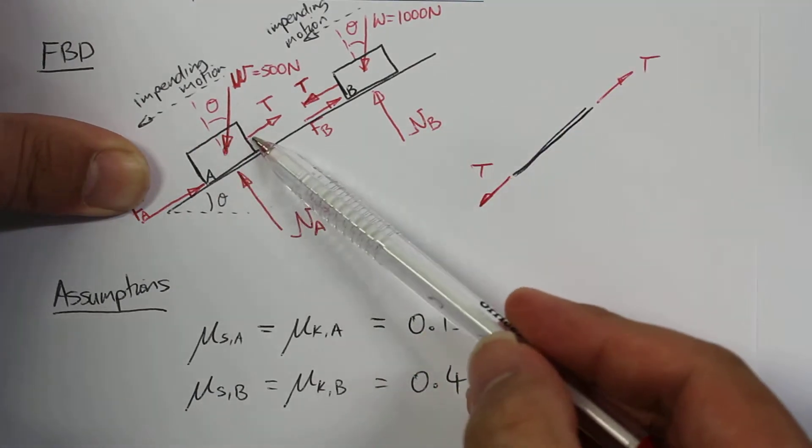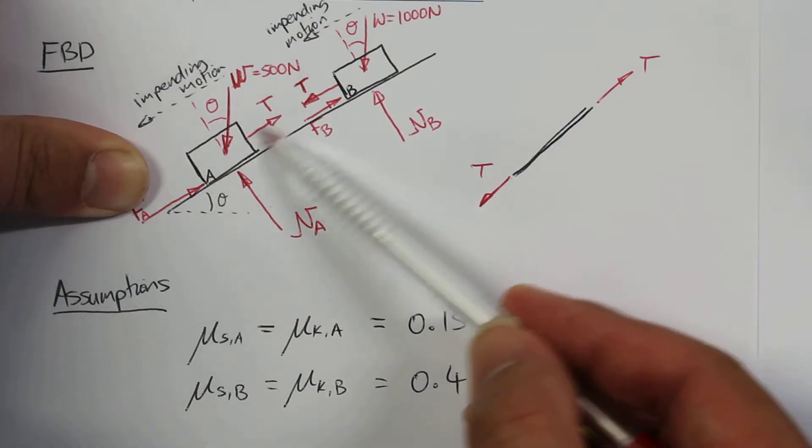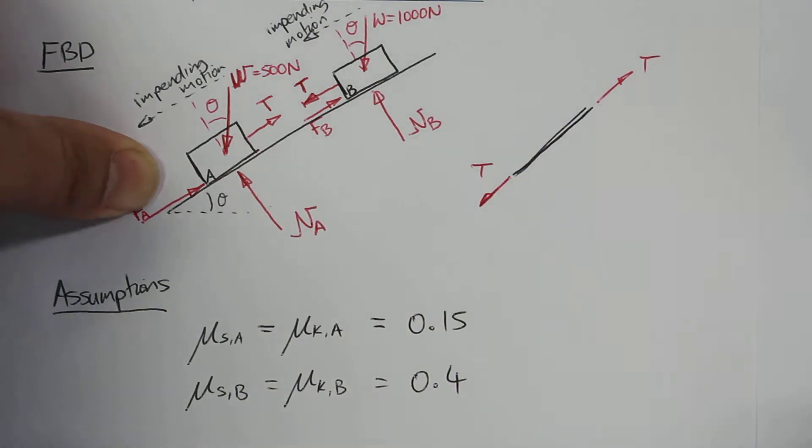And what we see is by Newton's third law, block A and block B are pulling in the opposite directions compared to these tension forces here.